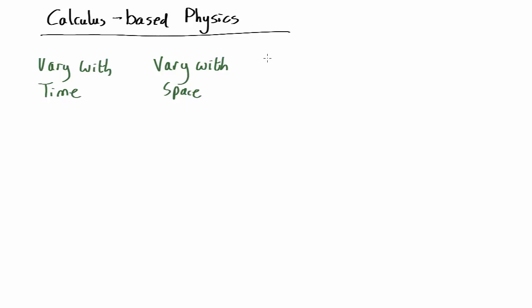We're then going to add another complication, which is varying with vectors. So what happens if this variation of whatever it is is a three-dimensional thing rather than just a one-dimensional thing?